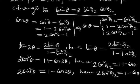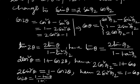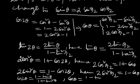Again, as cos 2θ equals 1 minus tan²θ by 1 plus tan²θ, in sub-multiple angles cos θ equals 1 minus tan²(θ/2) by 1 plus tan²(θ/2).